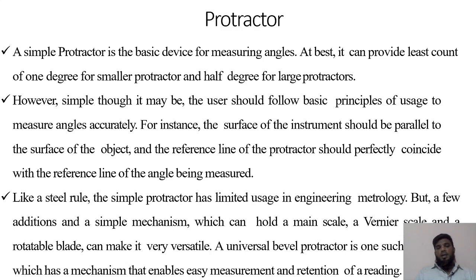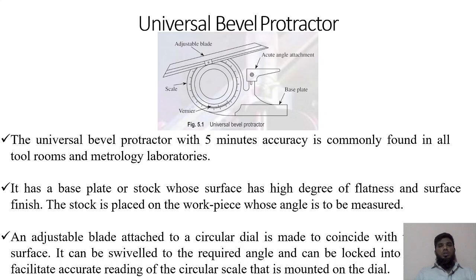Like a steel rule, the simple protractor has limited usage in engineering and metrology. But a few additional mechanisms can be added — similar to how we use a main scale and vernier scale in linear measurement. Similarly, some protractors have a main scale, vernier scale, and a rotatable blade to increase versatility. The universal dual protractor is one such instrumentation which has the mechanism that enables easy measurement.